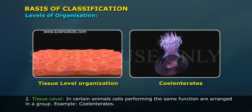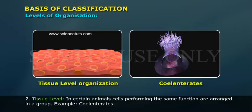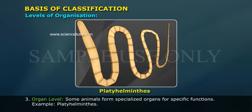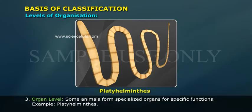At the tissue level, in certain animals, cells performing the same function are arranged in a group. Example: cnidarians. At the organ level, some animals form specialized organs for specific functions. Example: platyhelminthes.